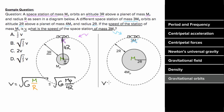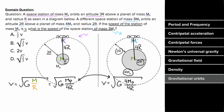For the space station of mass 3ms, we use the same formula: v = √(G × 4mp / (2r + 2r)) = √(G × 4mp / 4r). Comparing the two expressions, the only difference is an extra factor of four inside the square root for the second station. The square root of four is two, so the second space station travels at two times the speed of the first. Therefore the space station of mass 3ms has speed 2v.